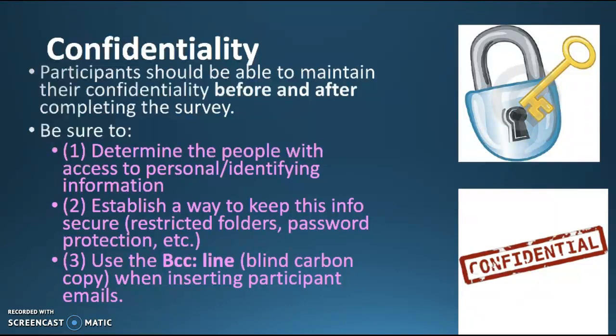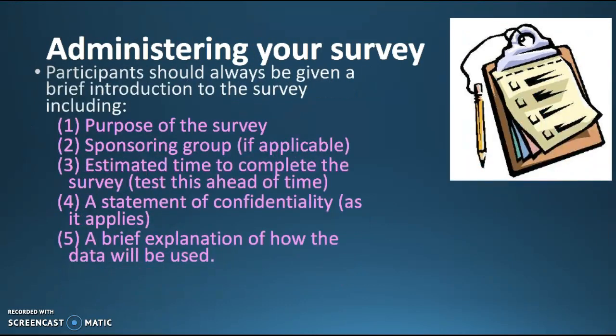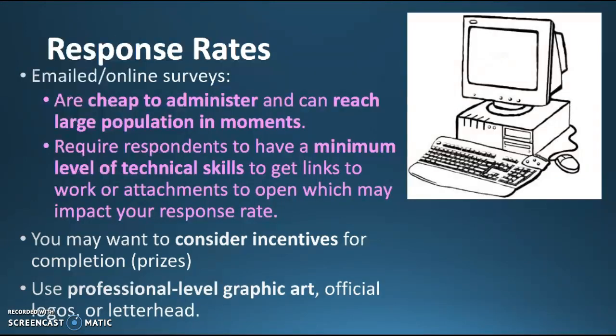Confidentiality: you should maintain participant confidentiality before and after completing a survey. Determine who's going to have access to everything. Establish a way to keep it secure with passwords, encryption, and so forth. If you're doing an email survey, use the BCC line — Blind Carbon Copy — when inserting participant emails so that all respondents don't get each other's email addresses. When you administer your survey, participants should be given a brief introduction including the purpose, the sponsoring group, how much time it's going to take, a statement of confidentiality, and an explanation of how you're going to use the data — so they feel more certain about what it's all for.